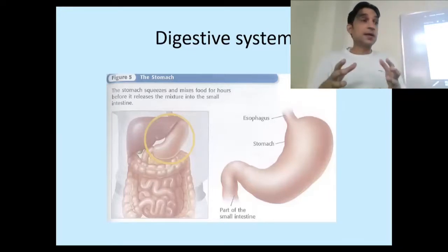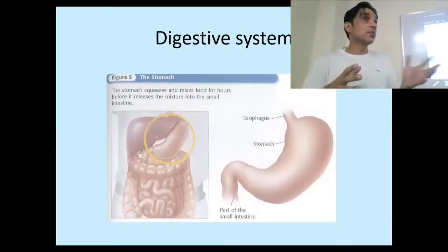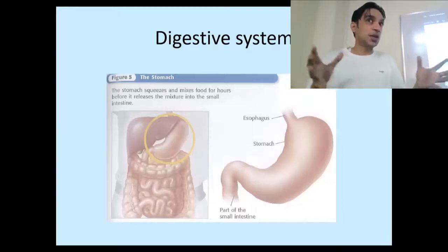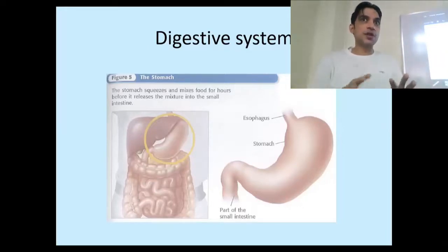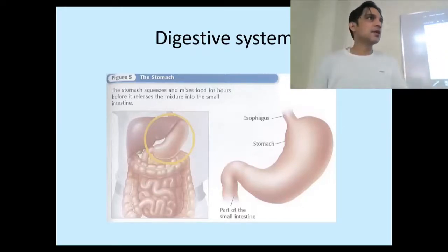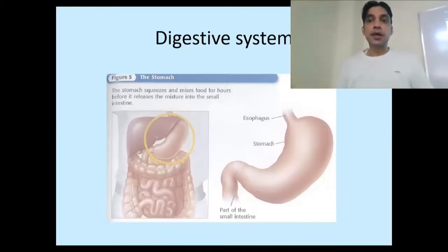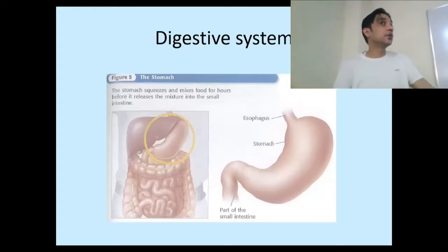The walls of the stomach contain smooth muscles. Once food is there, the smooth muscles start contracting and relaxing, and that contraction and relaxation gives mechanical digestion — meaning the physical breakdown of the food.